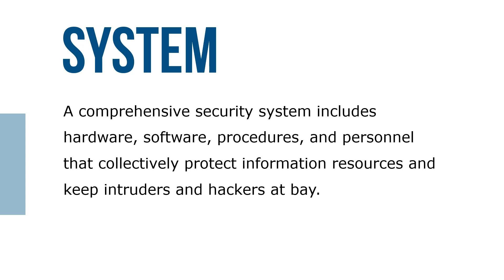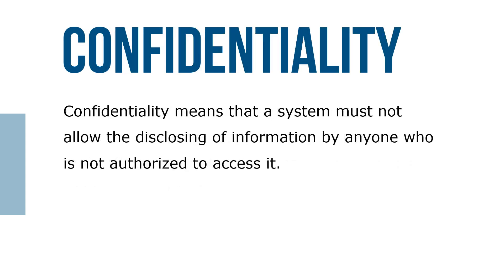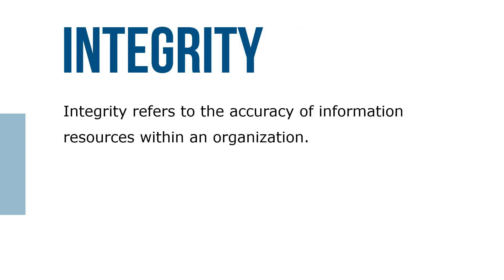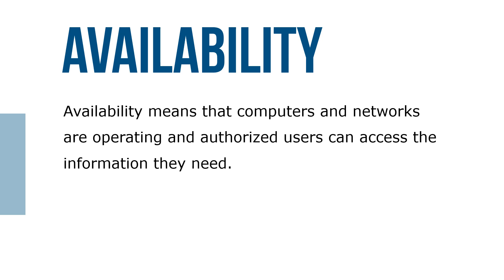There are three important aspects of computer and network security: confidentiality, integrity, and availability, collectively referred to as the CIA triangle. Confidentiality means that a system must not allow the disclosing of information by anyone who is not authorized to access it. Integrity refers to the accuracy of information resources within the organization. Availability means that computers and networks are operating and authorized users can access the information they need.